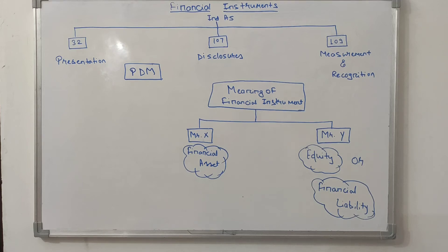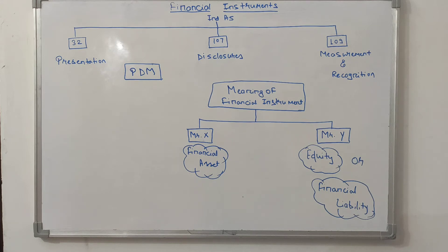We will be discussing one of the most important topics: financial instruments. I have created a chart showing three IndAS standards — IndAS 32, IndAS 107, and IndAS 109 — all three governing different things. IndAS 32 shows guidelines of presentation, IndAS 107 governs disclosures, and IndAS 109, which is very important, governs measurement and recognition.